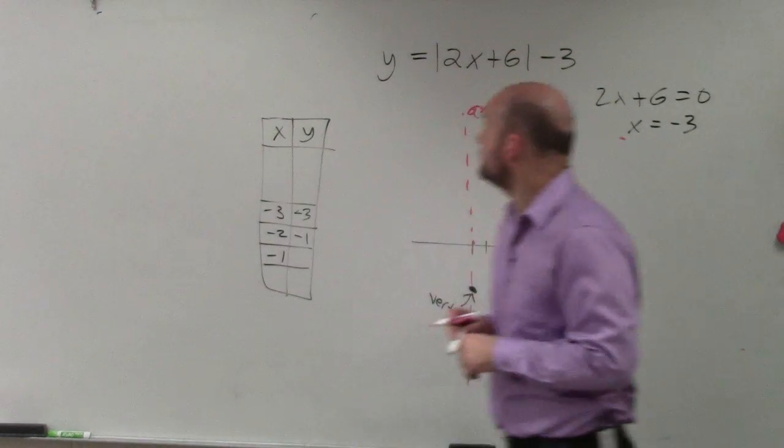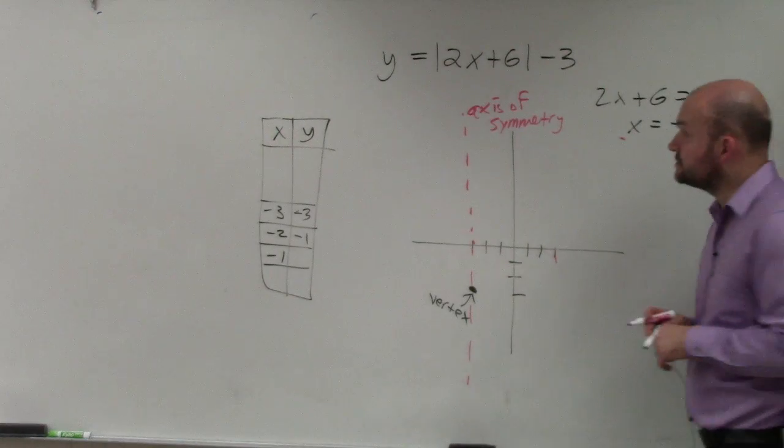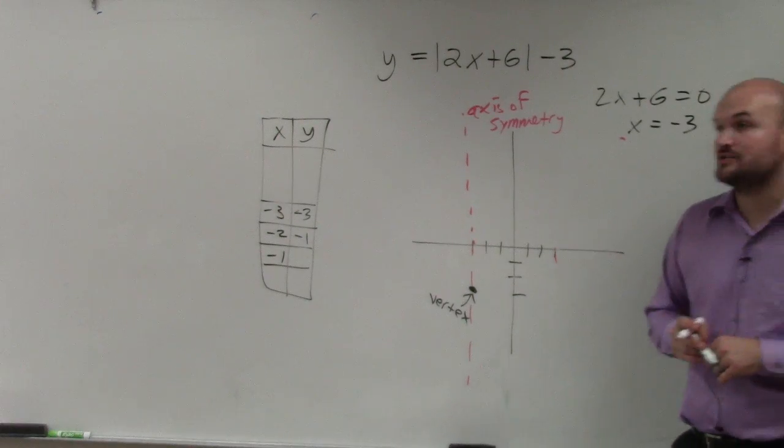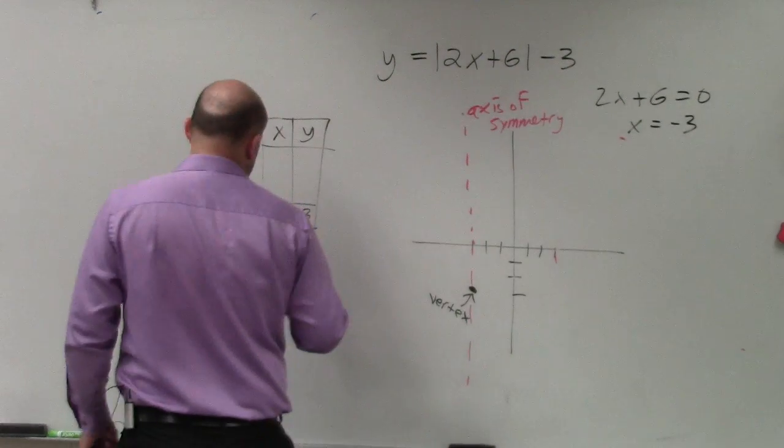If I plug in negative 1, 2 times negative 1 is negative 2. Negative 2 plus 6 is 4. Absolute value of 4 is 4. 4 minus 3 is 1. So let's plot these points.